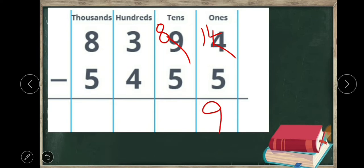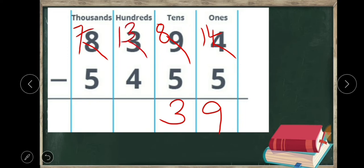Now ones place becomes fourteen. Fourteen minus five is nine. Moving to the tens place: eight minus five is three. At the hundreds place, three minus four is not possible, so we borrow a thousand from the thousands place, making it seven thousands and thirteen hundreds. Thirteen minus four is nine. Then thousands place: seven minus five is two. So the answer is two thousand nine hundred and thirty nine.